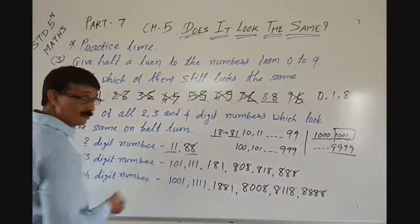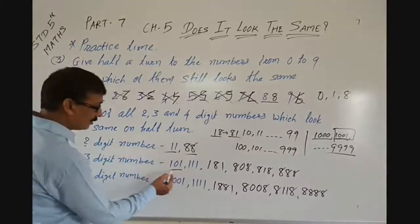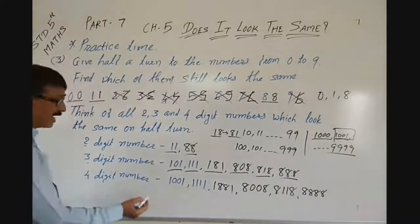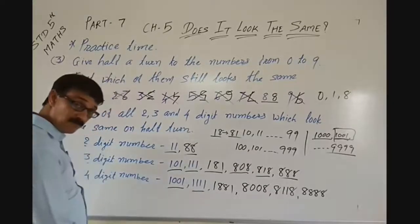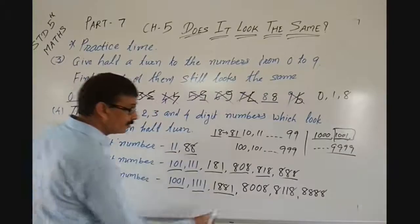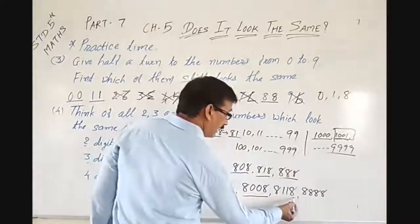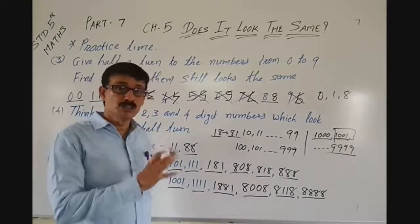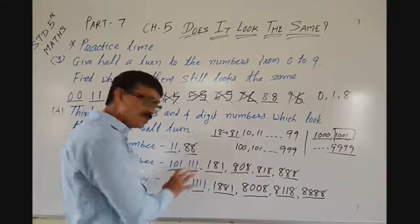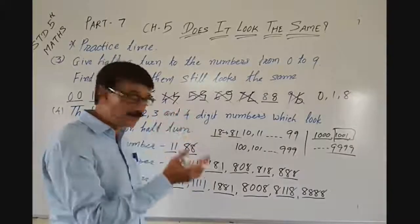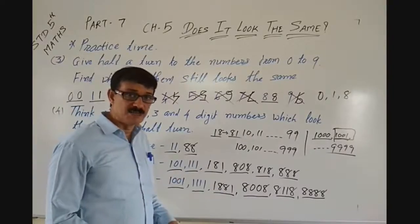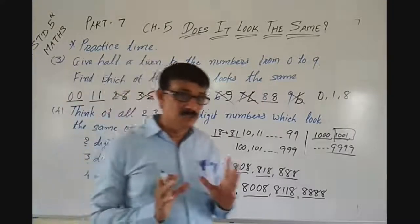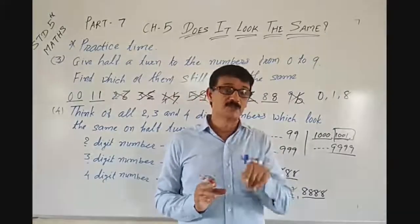So these are the numbers. Two digit numbers are 11 and 88. Three digit numbers are 101, 111, 181, 808, 818, and 888. Four digit numbers are 1001, 1111, 1881, 8008, 8118, and 8888. Do it yourself — give it a half turn — you will come to know all these look the same. Let's go for the next practice. By this time we are ending this part and will start the next practice in the next part.